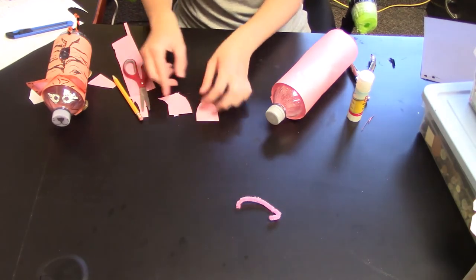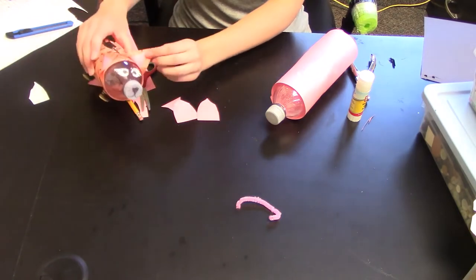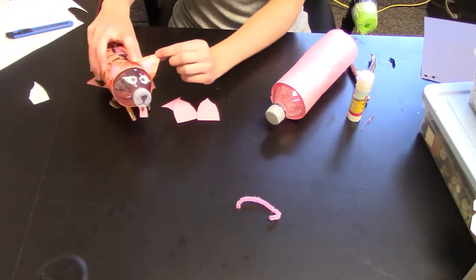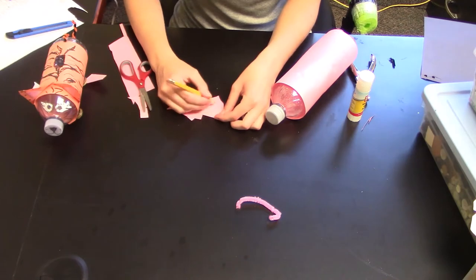If you want, you can take a different color and put it in the middle like I did with the ears here. Or you can just leave your ears like this and kind of draw.